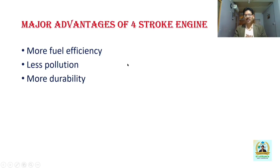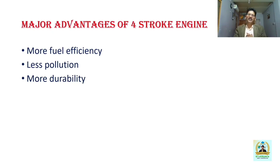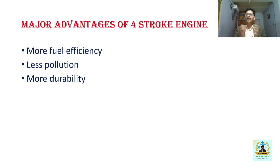It gives less pollution. Why? Because in two-stroke engines, lubricants are mixed with the fuel. In a four-stroke engine, lubricants are never mixed with fuel, so the probability of pollution is less. Also, since fuel efficiency is higher and very little fuel leaves unburnt, pollution is also less for that reason. Four-stroke engines are more durable compared to two-stroke cycle engines, because two-stroke cycle engines usually run at very high RPM, whereas four-stroke cycle engines run at lower RPM.